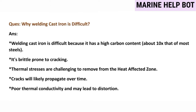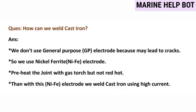These are the properties of cast iron that make it difficult to weld. To weld cast iron, we do not use a general purpose electrode as it may lead to cracks. Instead, we use a nickel ferrite electrode, preheat the joint with a gas torch — but not to red hot — and then weld using high current with the nickel ferrite electrode.